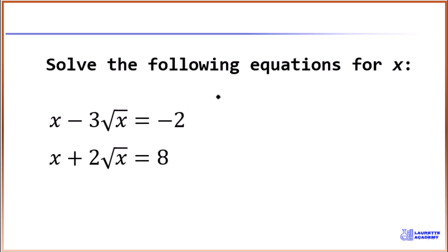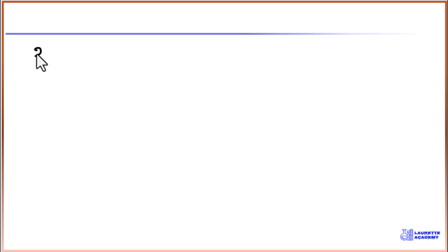We have these two equations to solve for x. Observe that the equations have a square root sign in them, so we need a way of transforming these equations to easily deal with the square root sign. Let's begin with the first one: x minus 3 times the square root of x is equal to minus 2.